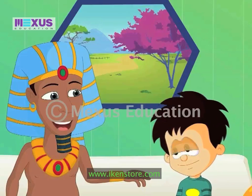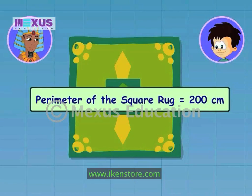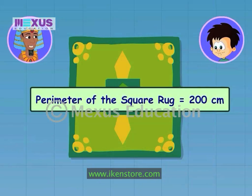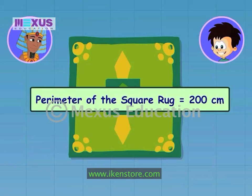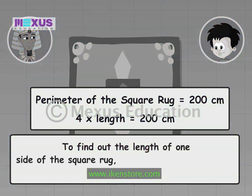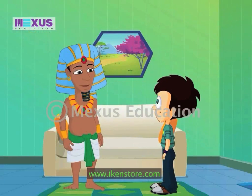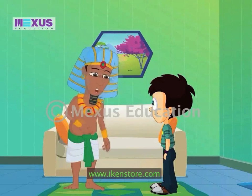You seem to know perimeter now. But can you tell me this: what if I told you that the perimeter of this rug is two hundred centimeters — can you tell me the length of any one of its sides? This rug is square in shape. So if the perimeter of this rug is two hundred centimeters, that means the length of the side of the rug multiplied by four is two hundred centimeters. To find out the length of one side of the rug, we should divide the perimeter by four. The length is two hundred divided by four, that is fifty centimeters. Oh, very good! Very, very good!